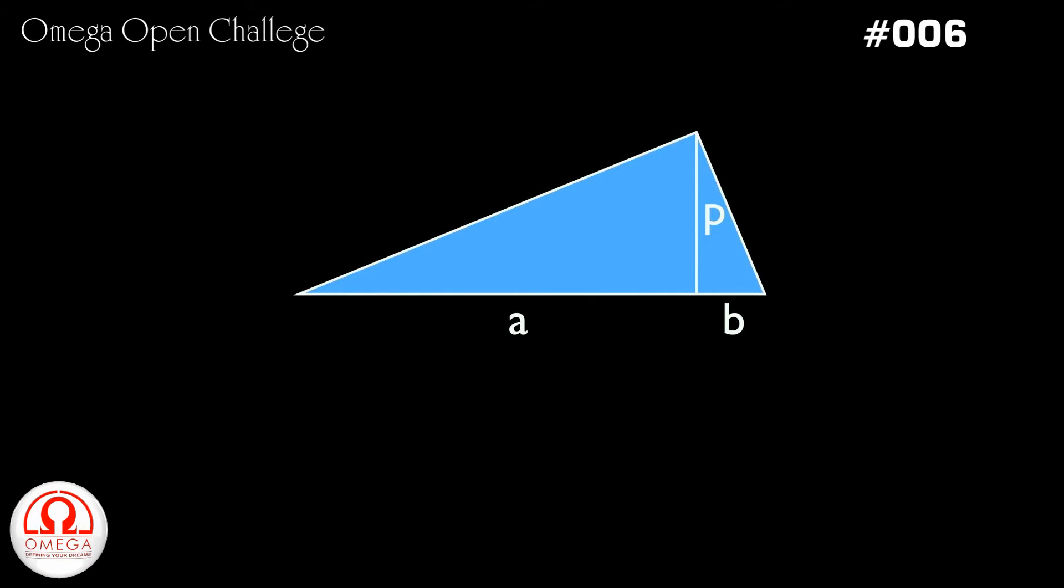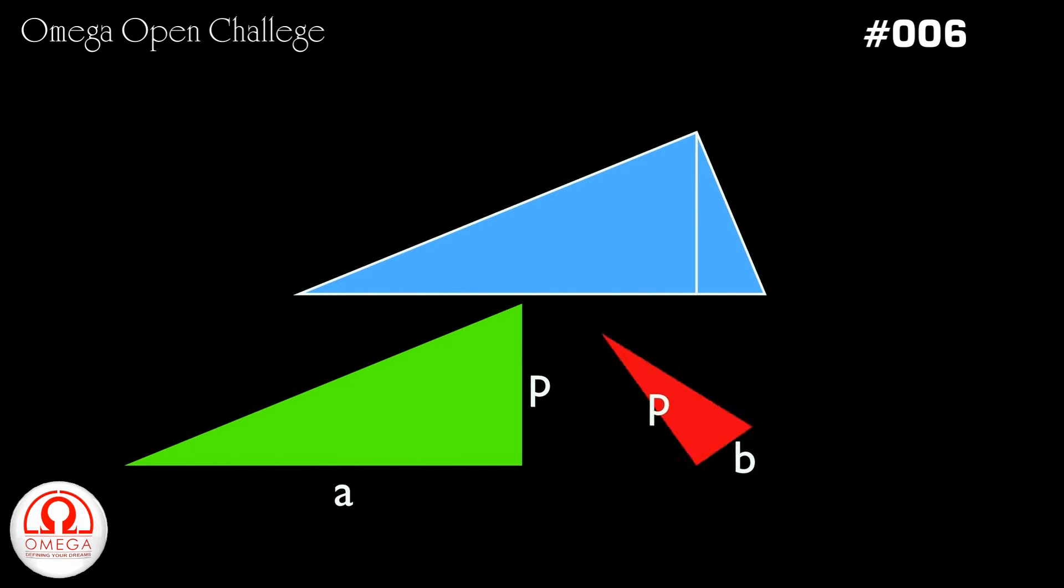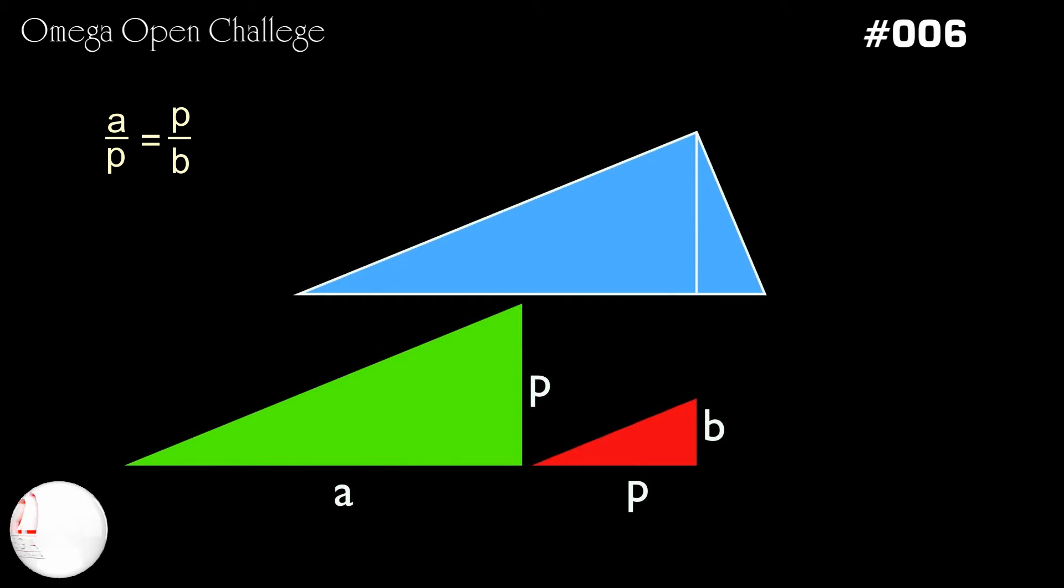The altitude divides the triangle into two triangles. These triangles are similar. This means the ratio of base and altitude must be equal for these triangles, or a by p must be equal to p by b. This implies p square is equal to a into b, or p is equal to root under a into b.